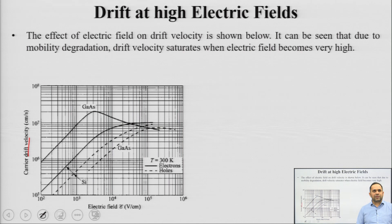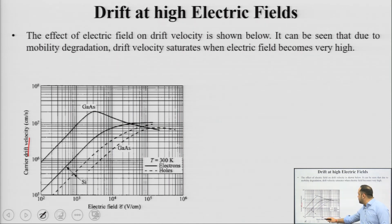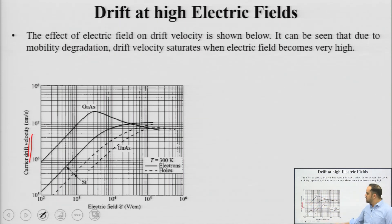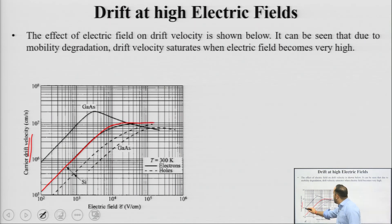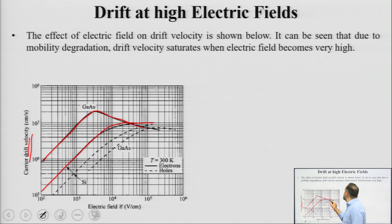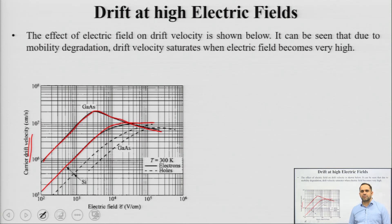At high values of electric field, drift velocity does not rise with electric field and it approaches a saturation. If we plot electric field on the x-axis and drift velocity on the y-axis, initially it will be proportional and then it will saturate. In very extreme cases at very high electric field, it might also start to roll off. This graph shows the behavior for semiconductors like silicon and gallium arsenide.